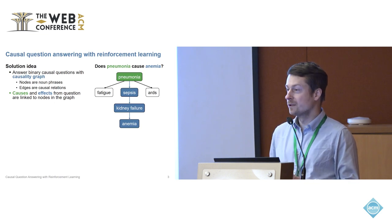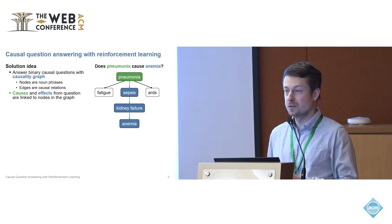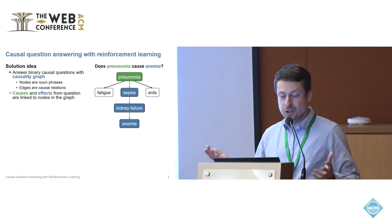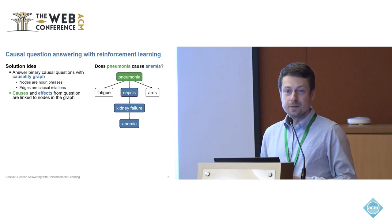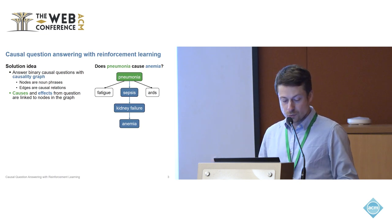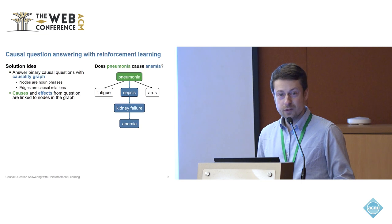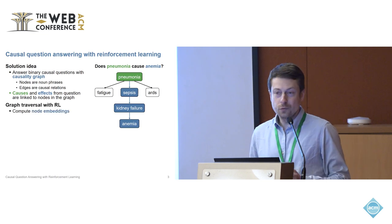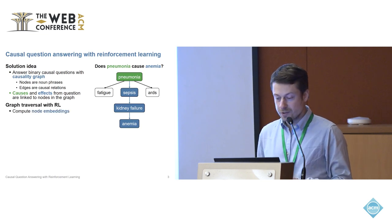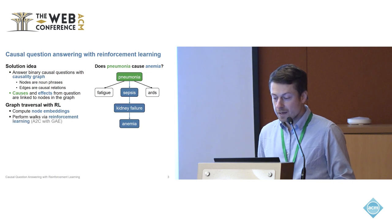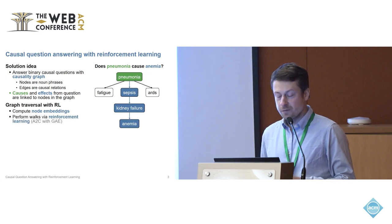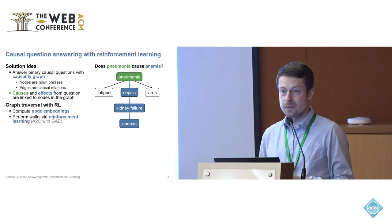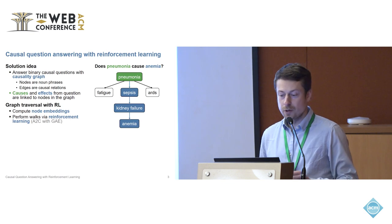In principle, we could search for such paths with a simple breadth-first search. But the problem is that the causality graphs are large. So in this work, we do the graph traversal with a reinforcement learning agent. We first compute embeddings for the nodes, and then perform random walks in the graph that are guided by the reinforcement learning agent.